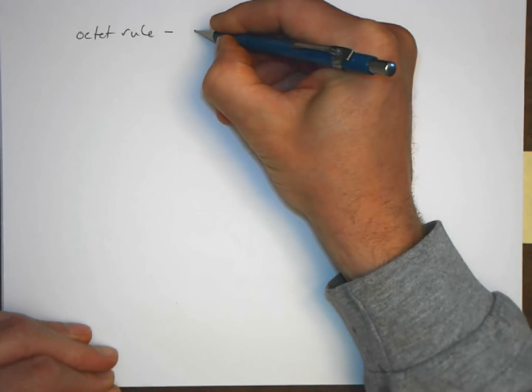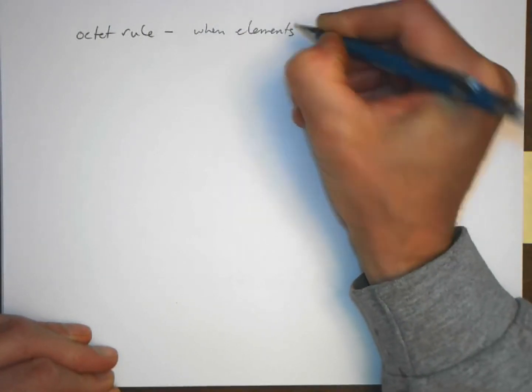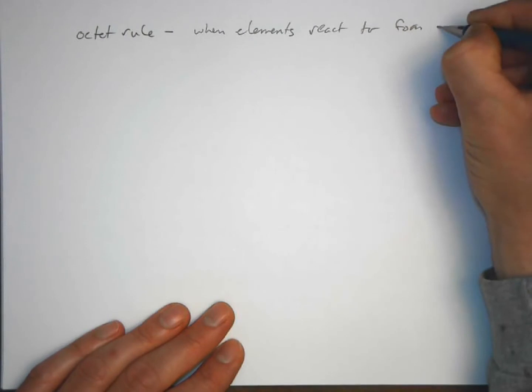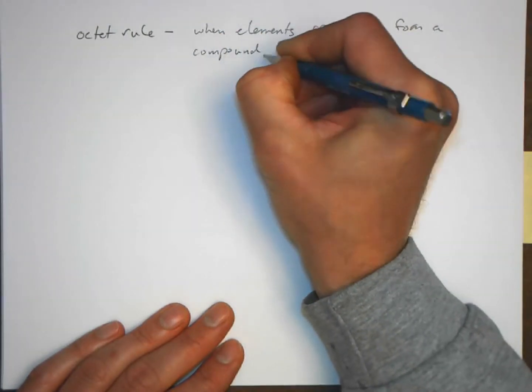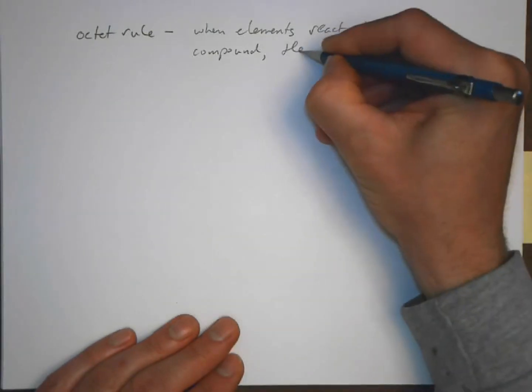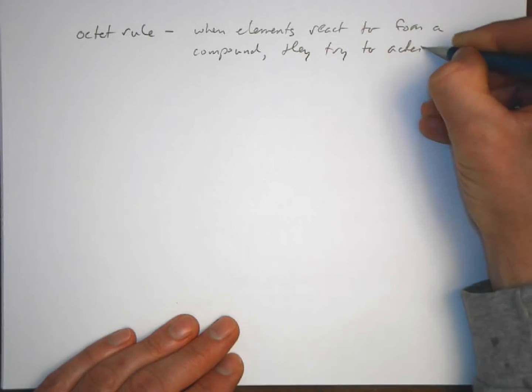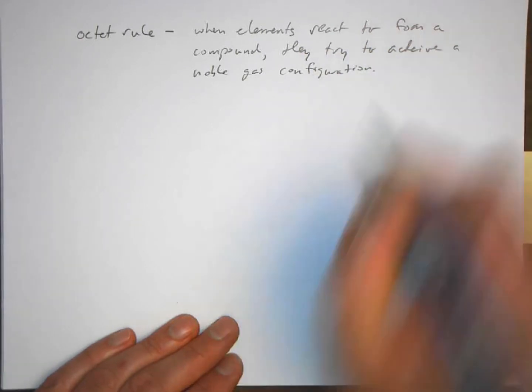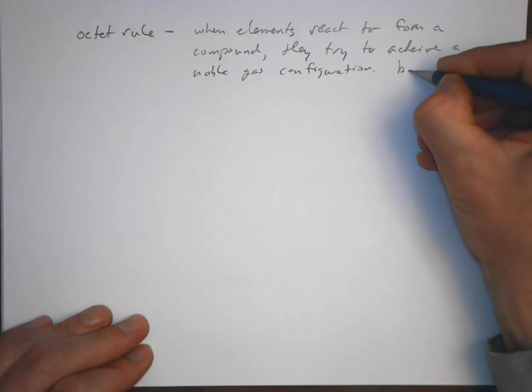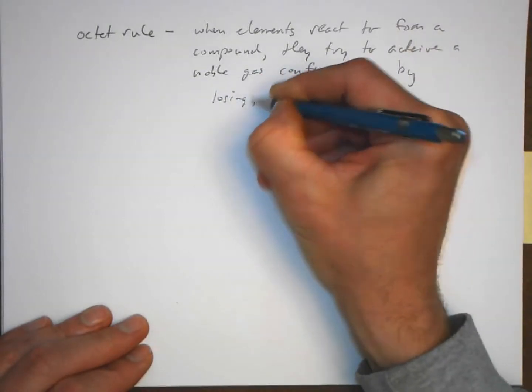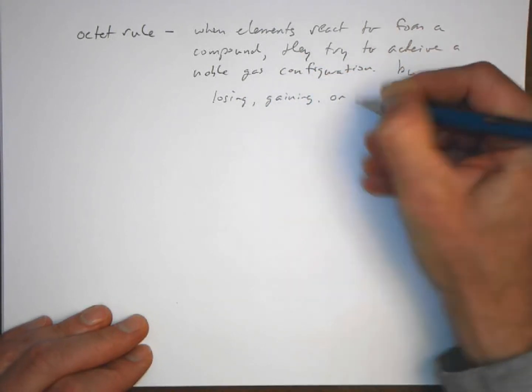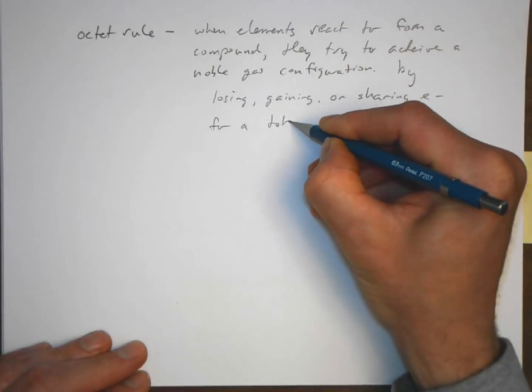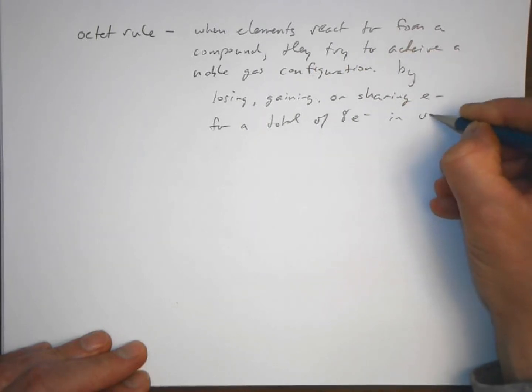And what we're going to use is this is going to give rise to this idea of something called the octet rule. What the octet rule says is that when elements react to form a compound, they try to achieve a noble gas configuration. And they do this by losing, gaining, or sometimes sharing electrons.